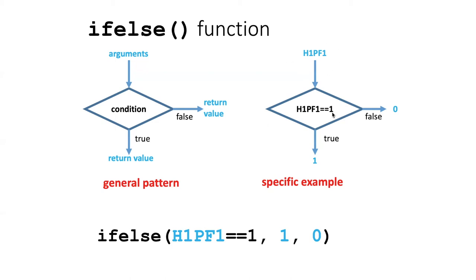And produce an entire vector of output values that will be a combination of either ones or zeros, depending on which of these conditions is true—whether the condition is true or false for each individual item in the vector.